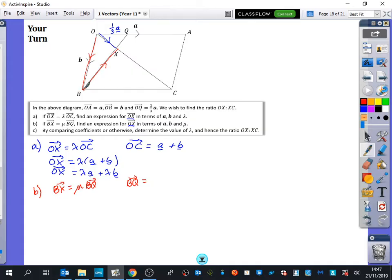BQ, to go from B to Q, it's going to be minus B plus a third A, which is just what you said, minus B plus a third A. Now, putting that over here, BX is a fraction of minus B plus a third A. So BX is minus mu B plus a third mu A.